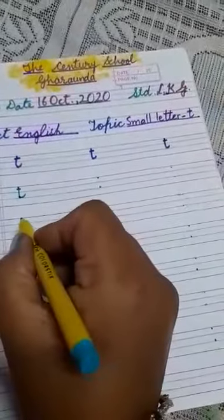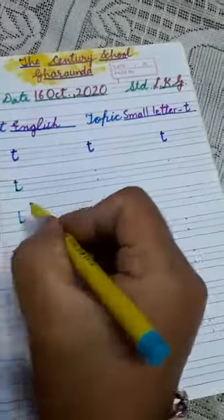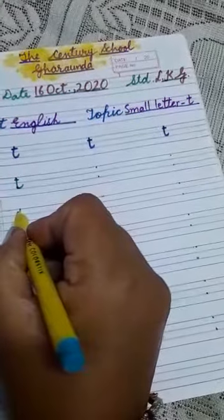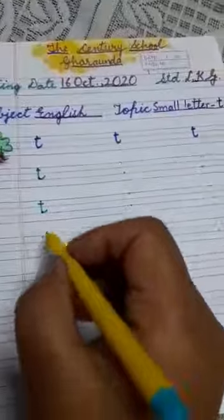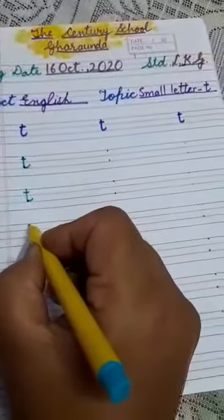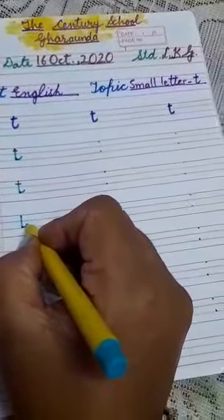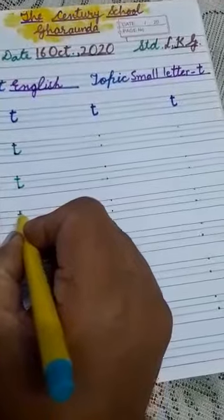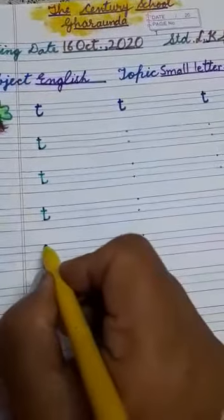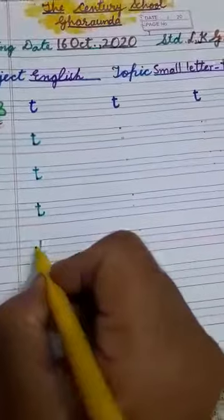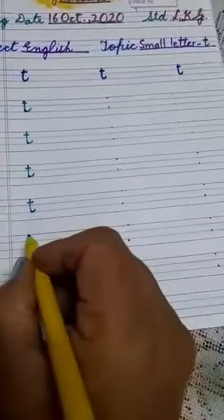Again, see — make straight line, then leave the curve and slipping line. This is T. Make straight line, then leave the curve and this is slipping line. T. The phonic sound of T is T.